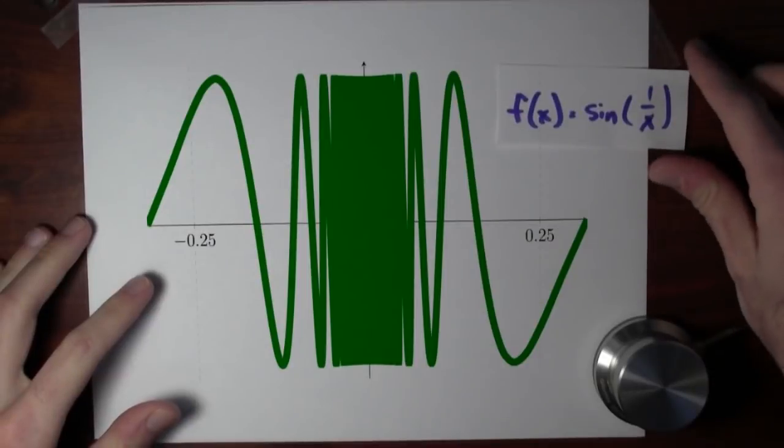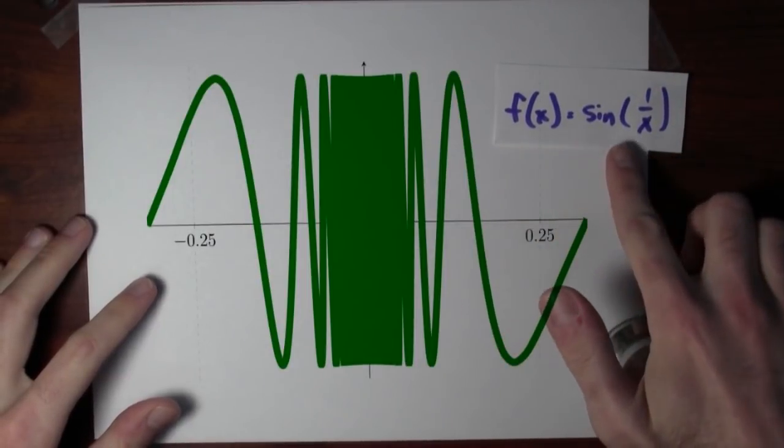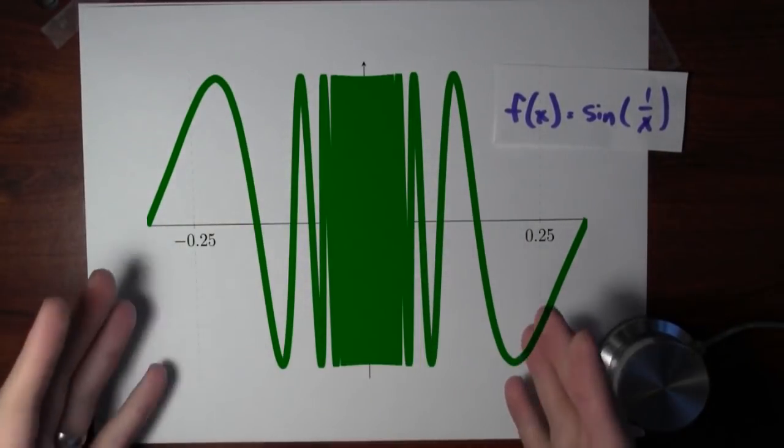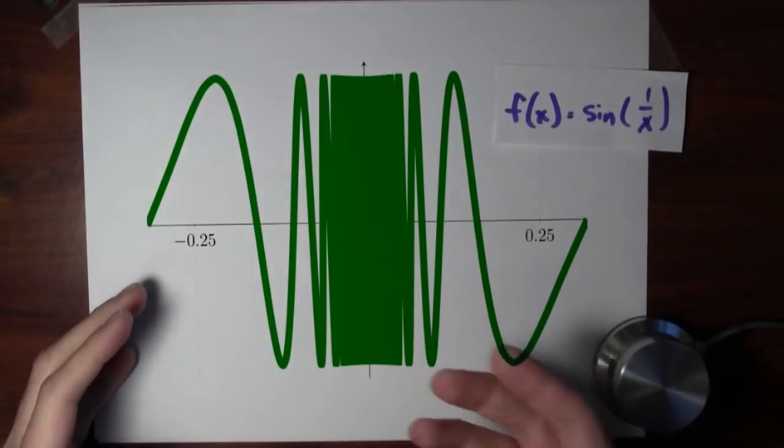Instead of a table, let's look at a graph. Here, I've got a graph of the function f(x) equals sine 1 over x. And you see the middle of this graph is just that horrible green blob. It's really hard to make out any detail.